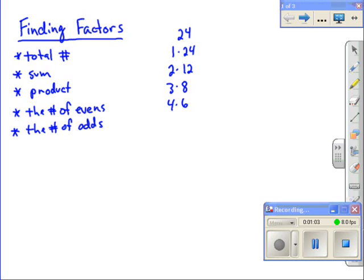As you can see the total number for this particular problem is 8. The sum would be if we added all these up. So 1 plus 2 plus 3 plus 4, that's 10. 6 plus 8 is 14, so that's 24, 48. So the sum for this particular problem is 60.